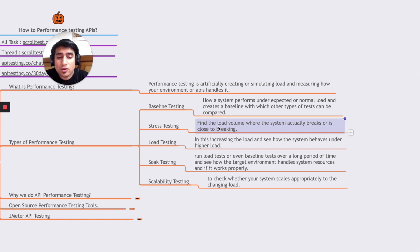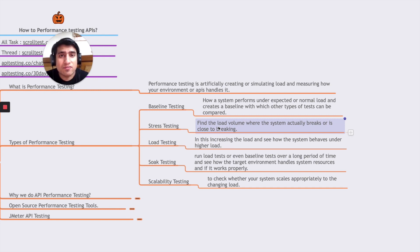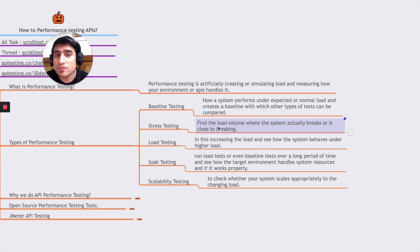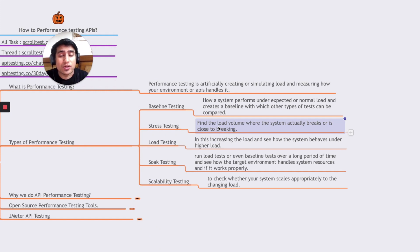Load testing is about increasing the load to see how the system behaves under higher load — for example, 1200 requests per second. Is the system giving errors, not responding, or returning unexpected JSON? I've been in the industry for more than eight years and I've seen APIs misbehave many times. Performance testing is one of the most important things you need to do.